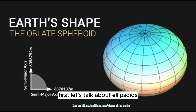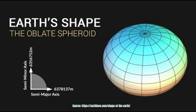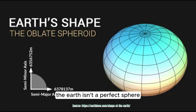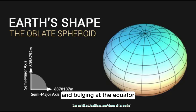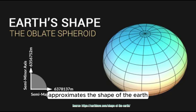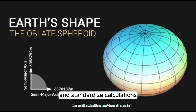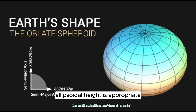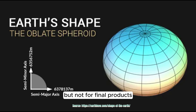First, let's talk about ellipsoids. The Earth isn't a perfect sphere — it's slightly flattened at the poles and bulging at the equator. An ellipsoid is a mathematically defined surface that approximates the shape of the Earth. This model helps us simplify and standardize calculations for geographic and surveying purposes. Ellipsoidal height is appropriate for intermediate calculations but not for final products.